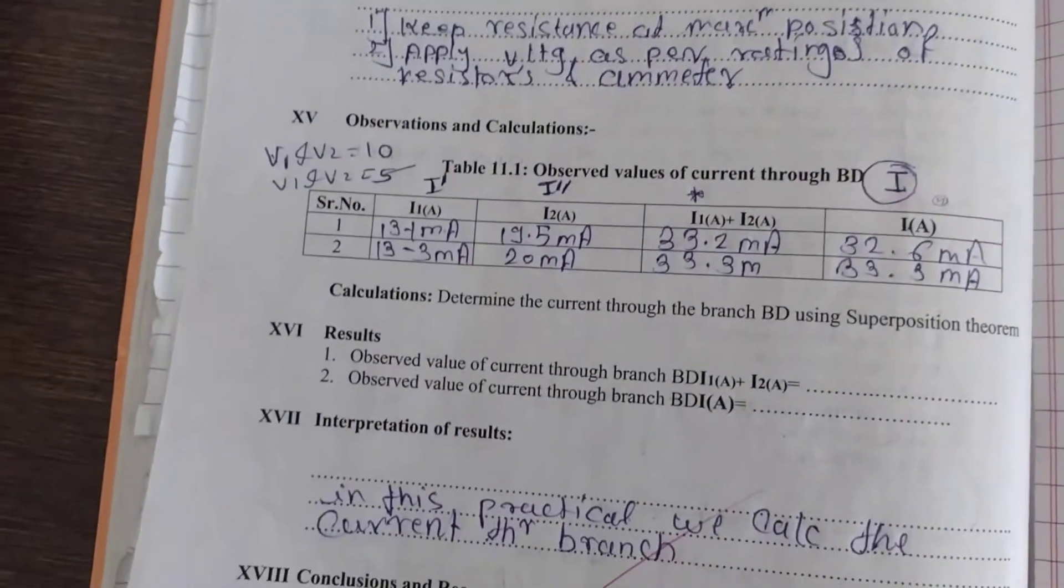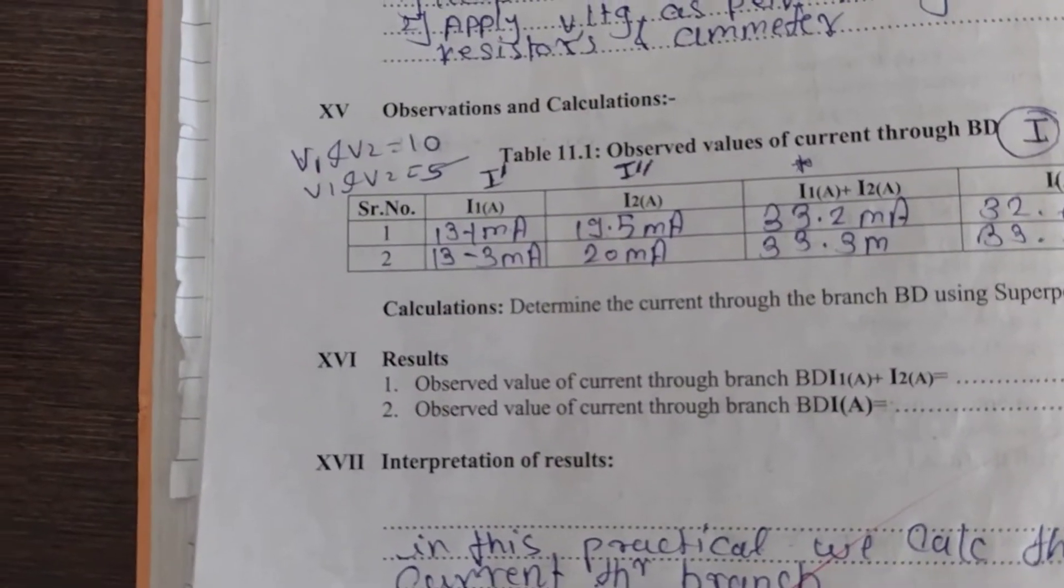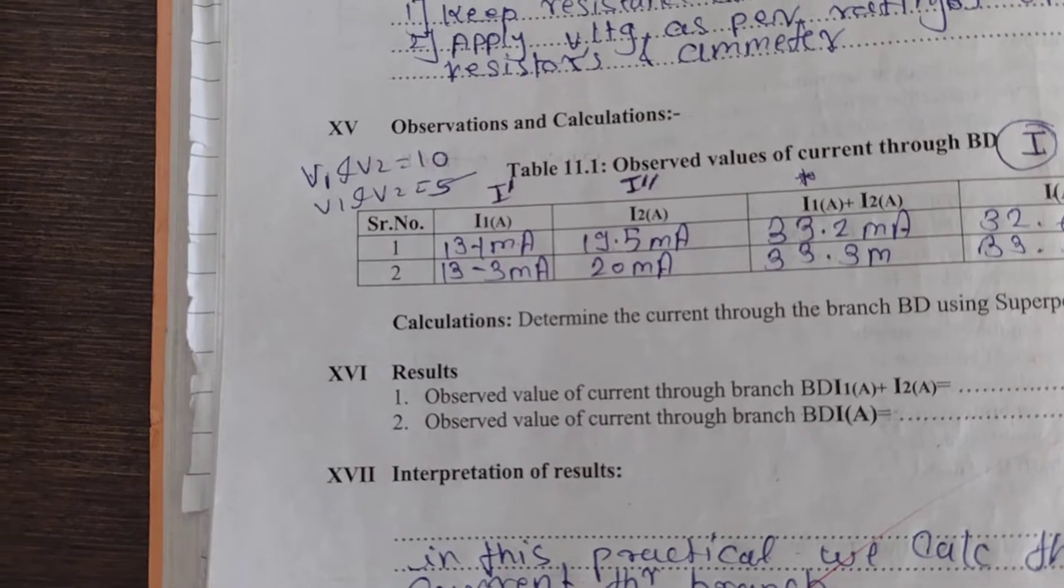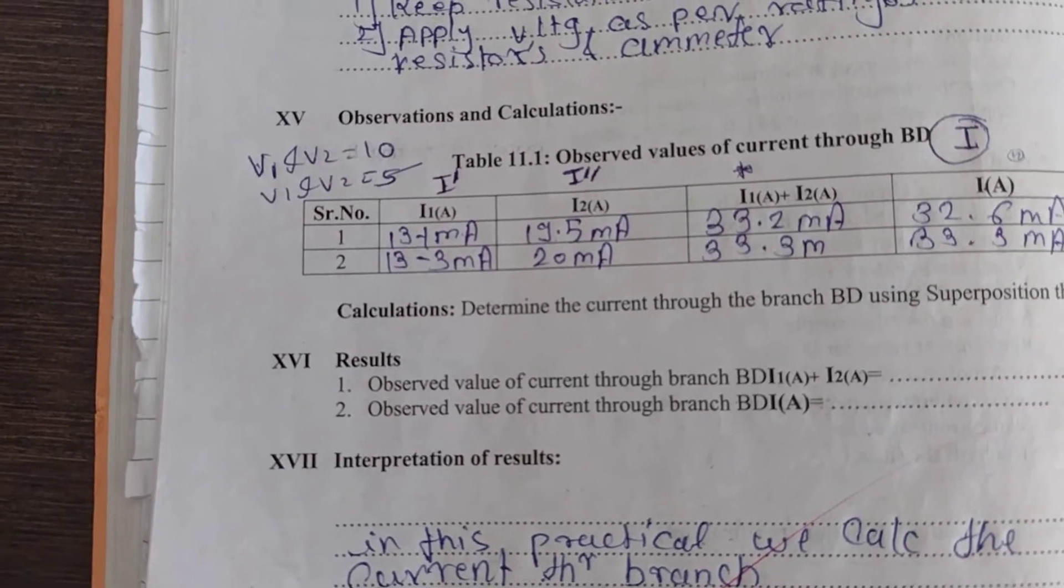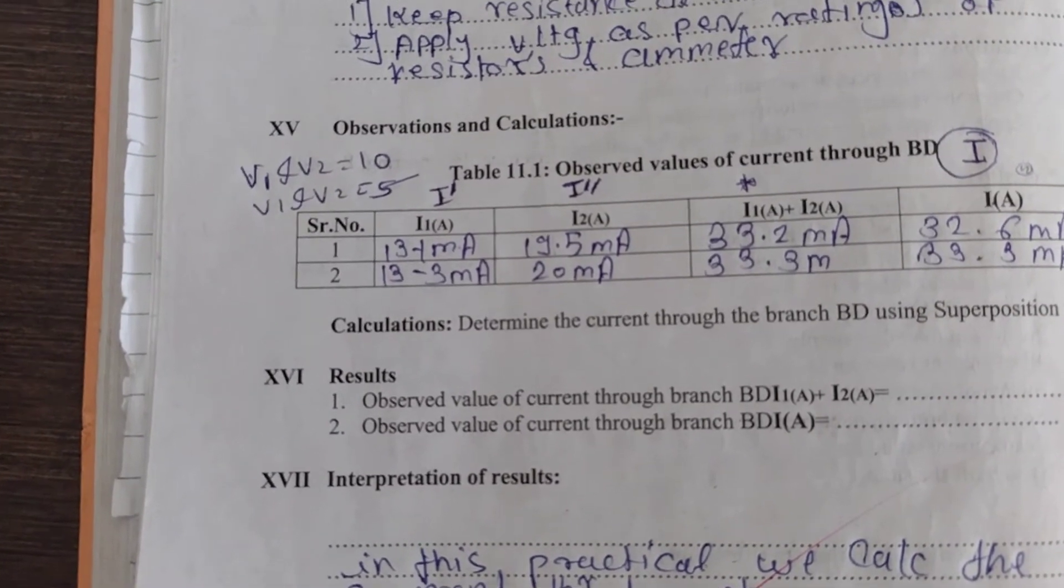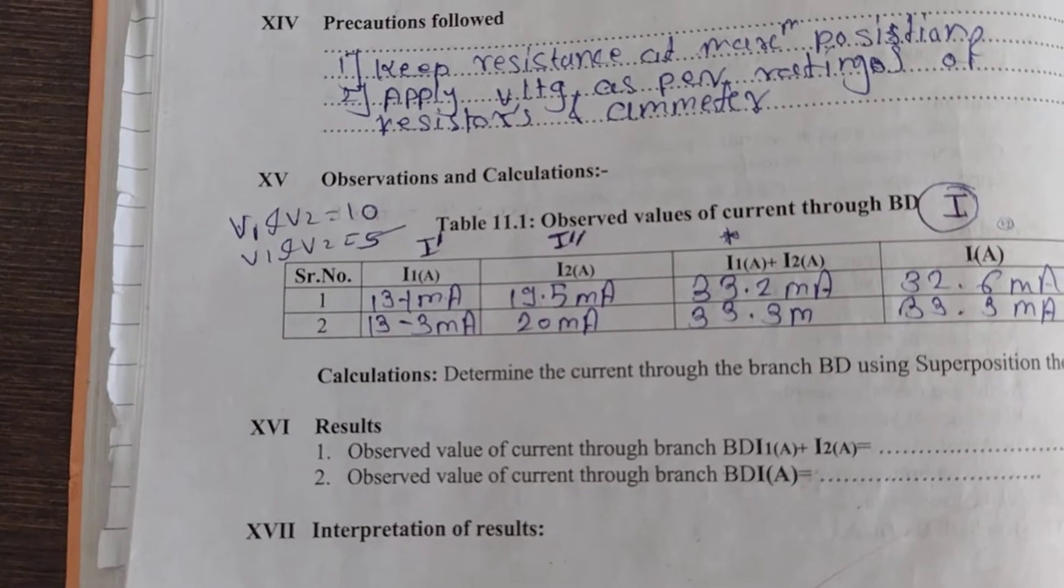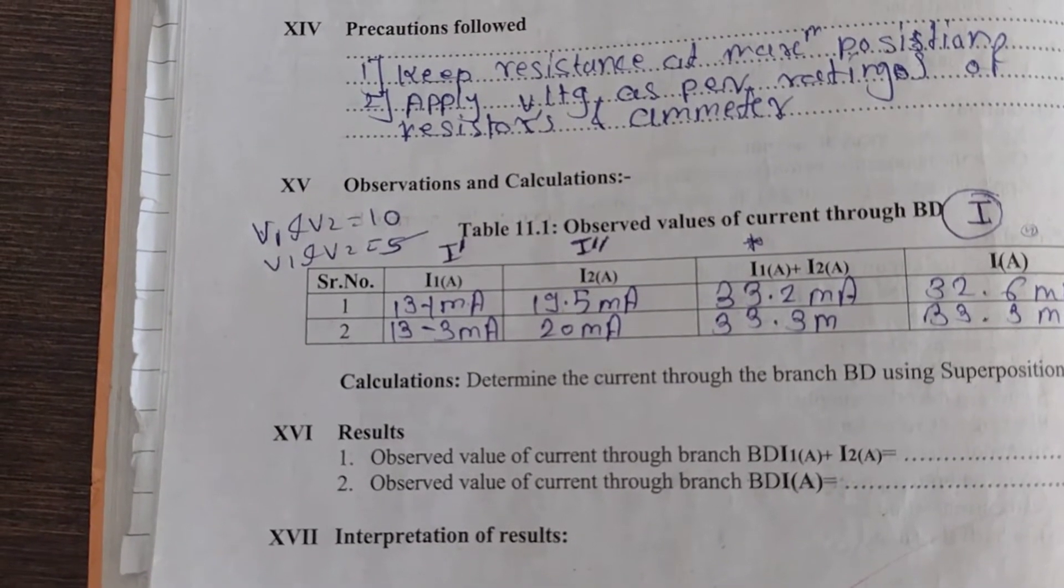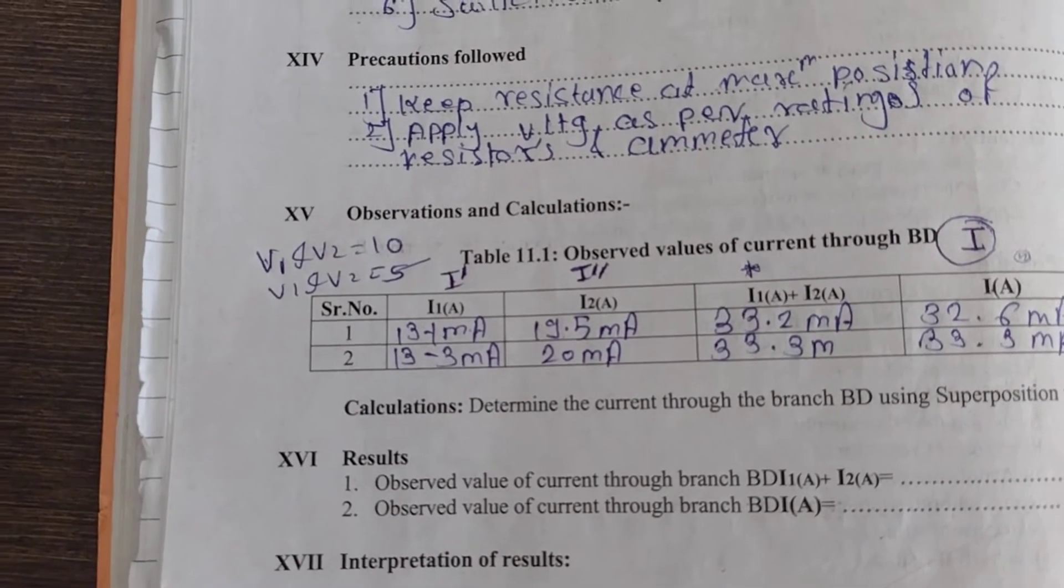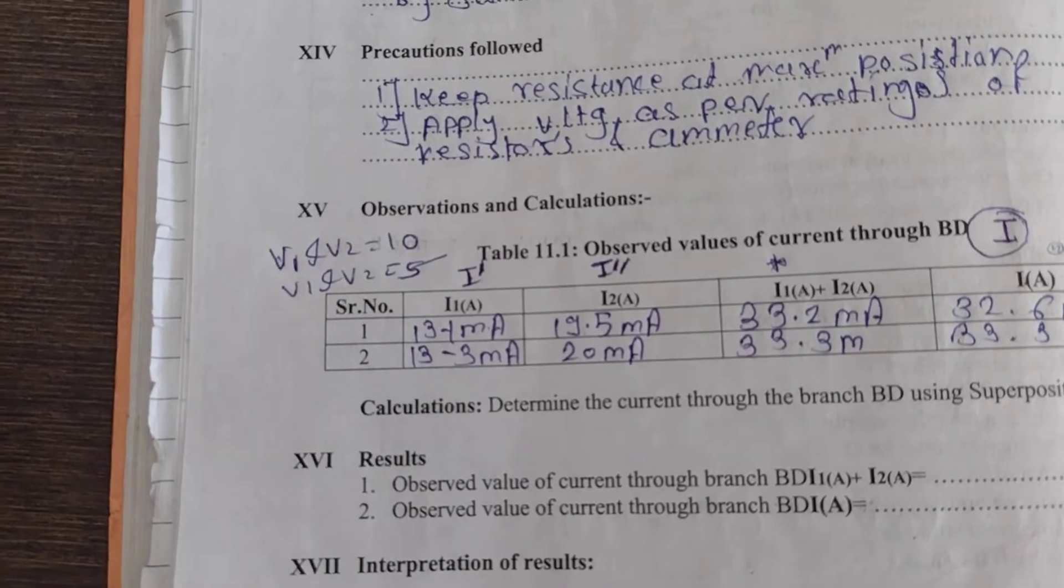Now we go to the observation table. We will measure I1, I2, I1 plus I2, and IA. For I1, we connect V1. For I2,